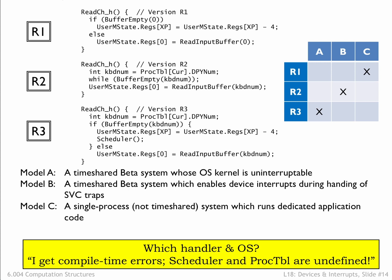The first message says: 'I get compile time errors — scheduler and proc table are undefined.' On the right of the slide, we've included a table enumerating all the combinations of handlers and systems, where we've X'd the matches from the previous slide since they correspond to when the new handler would be the same as the old handler and the user wouldn't be sending a message. The phrase 'scheduler and proc table are undefined' wouldn't apply to a time-sharing system which includes both symbols, so we can eliminate the first two columns from consideration. And we can also eliminate the second row since handler R2 doesn't include a call to scheduler. So this message came from a user trying to run handler R3 on a Model C system.